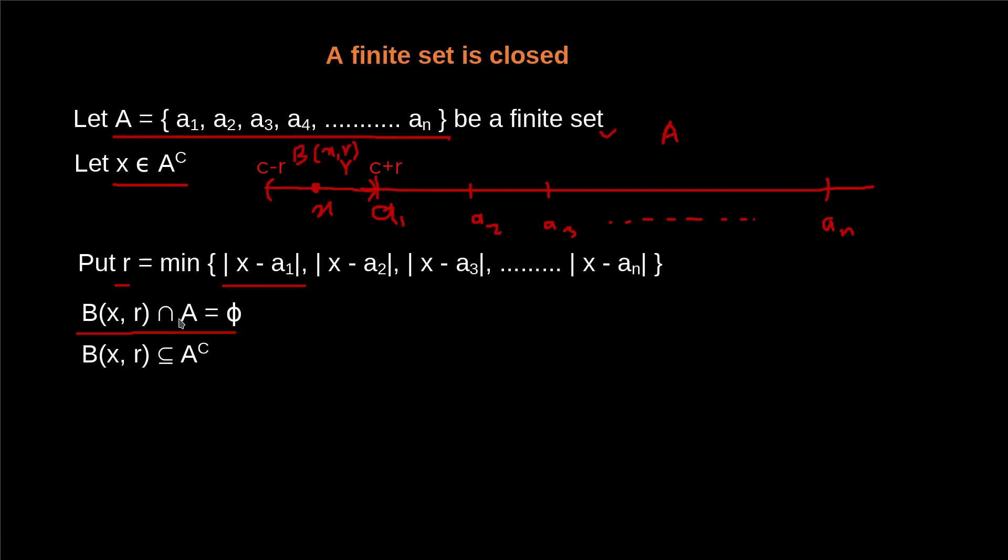So this implies that this open ball B(X, r) lies in A complement. And it is very clear from the given figure as well, because this region is A complement, it is outside of A. And this ball with center X and radius r, this totally lies outside of A, that is A complement.